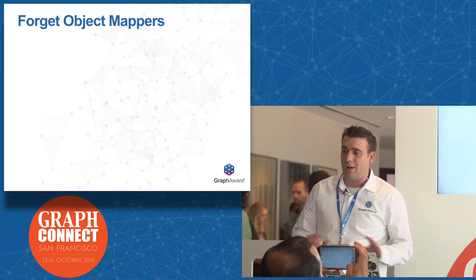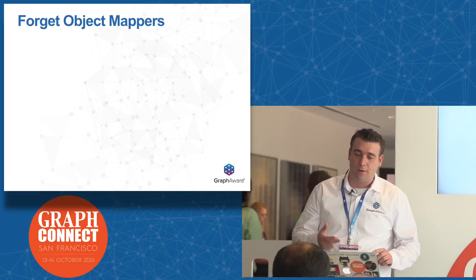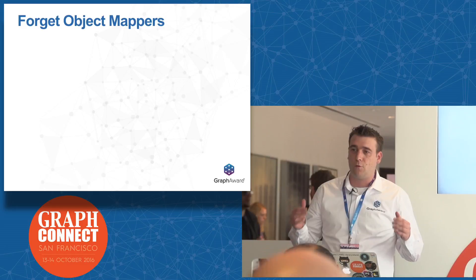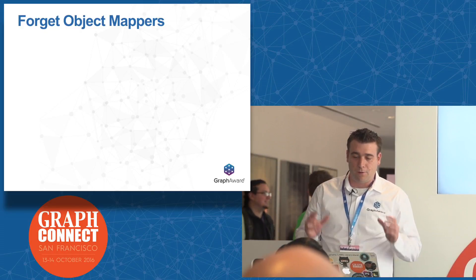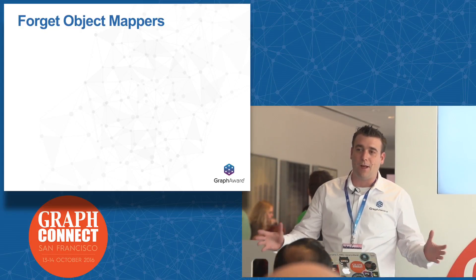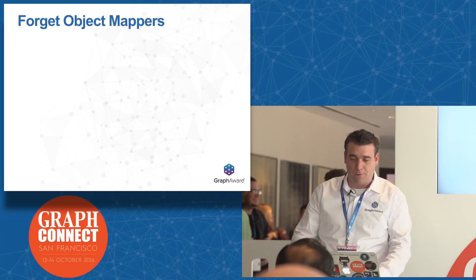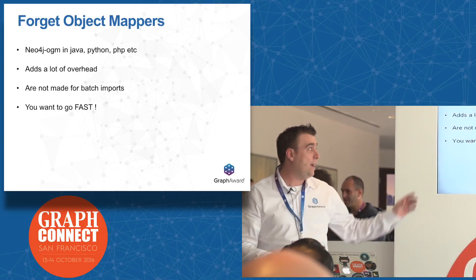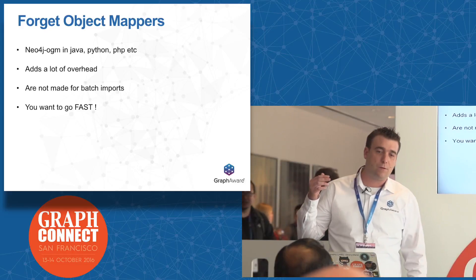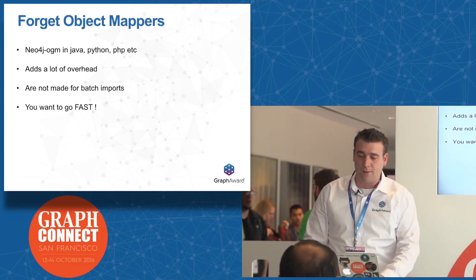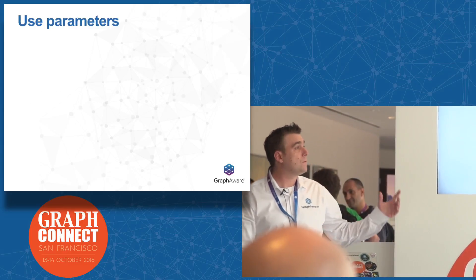The second thing to do is to forget completely about object mappers. You can find Java Neo4j OGM, Python OGM, etc. But when you want to write fast, you need to write personalized queries for your domain. Object mappers add overhead at the application level with garbage collection and they are not made for batch imports. If you want to write hundreds of thousands of nodes as fast as possible, it doesn't make sense to use object mappers.